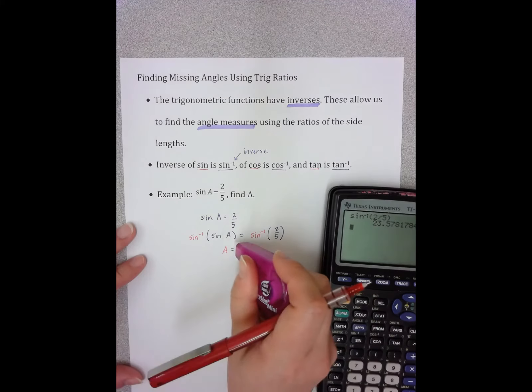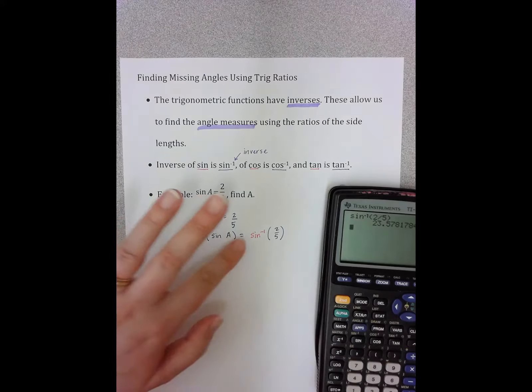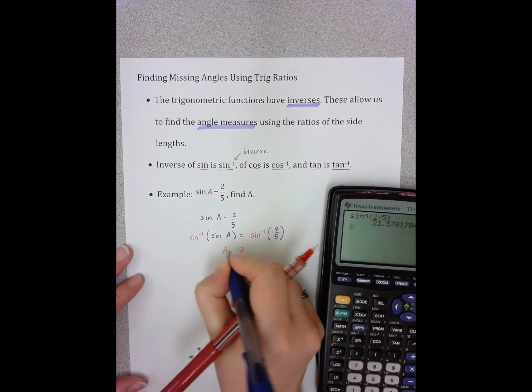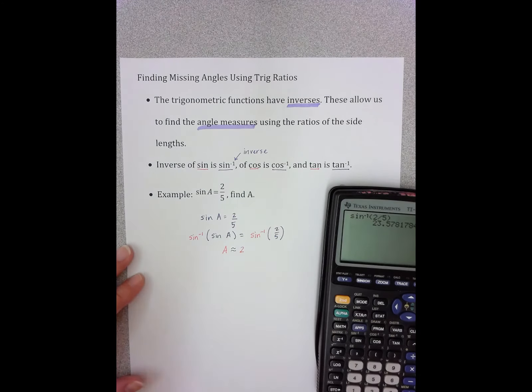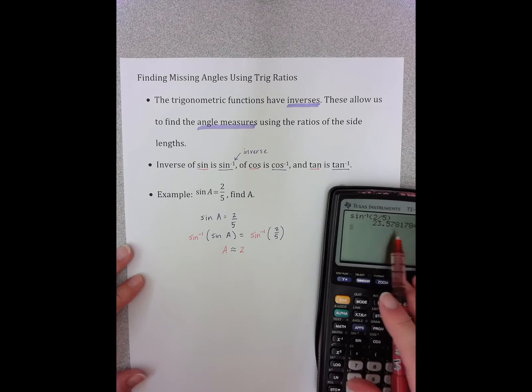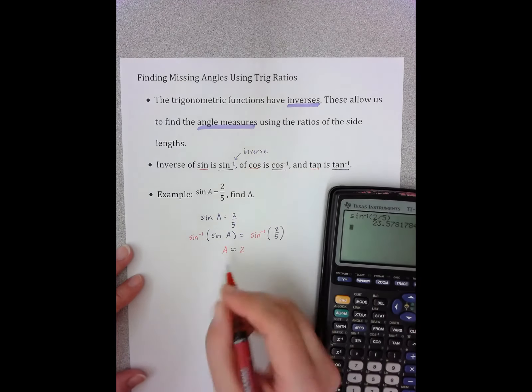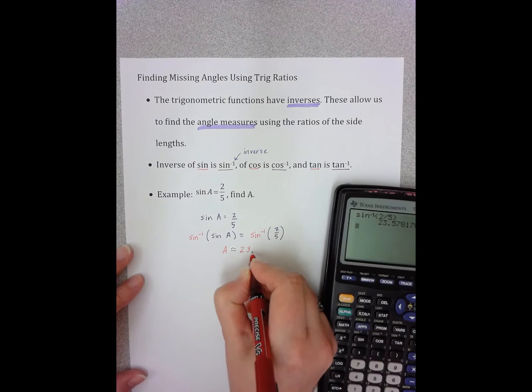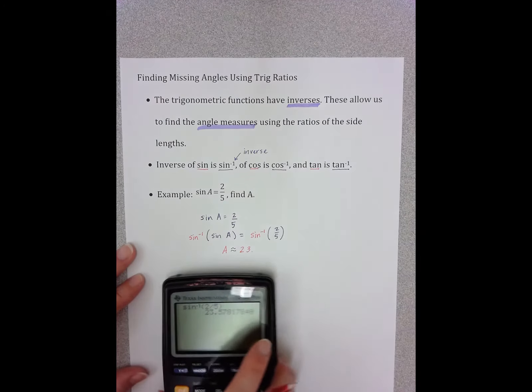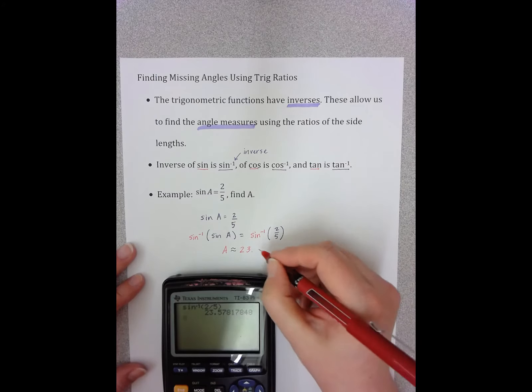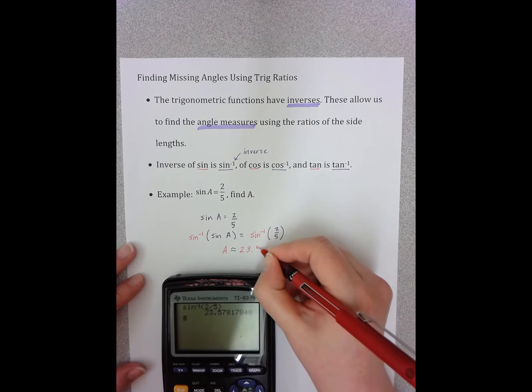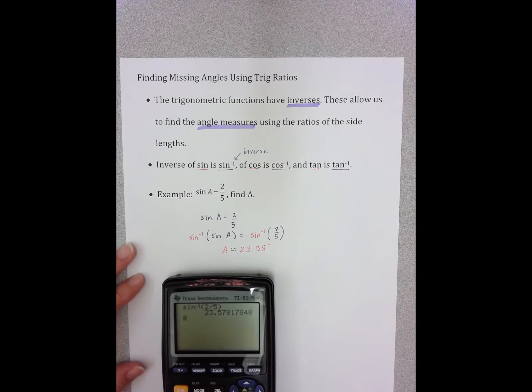And so now I know that A is approximately... And I'm using approximately here because I have a decimal that continues. It doesn't stop. And so I need to recognize that I am going to have to round here. And so I'm going to say 23.58 degrees.